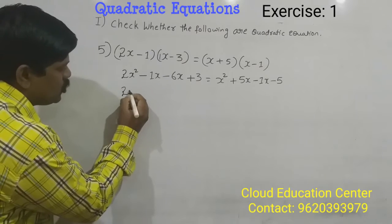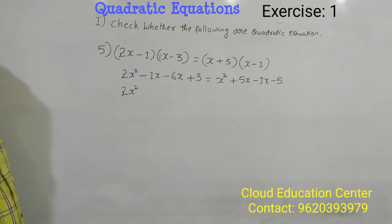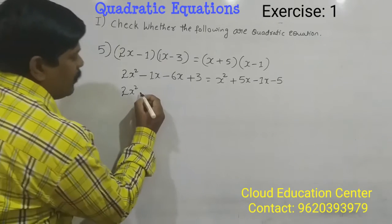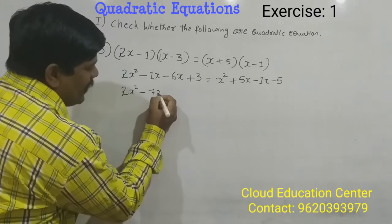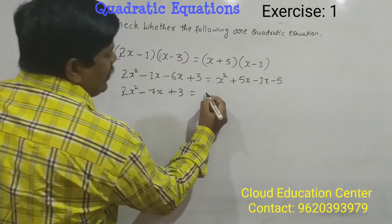Now it is 2x square here, minus 1x and minus 6x. It is the same sign so you add it and put minus 7x and plus 3 is equal to here.